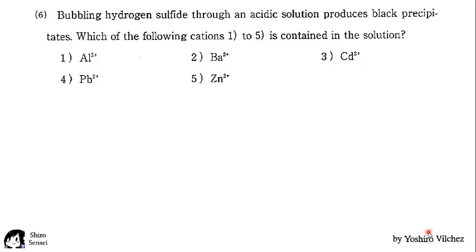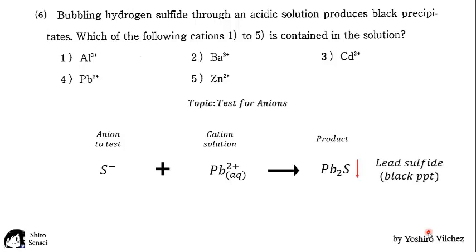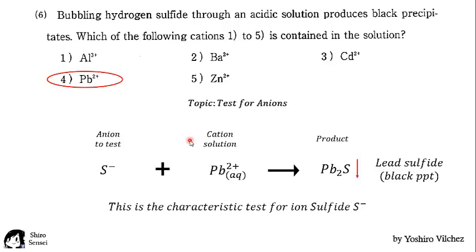How to do this? The topic for this problem is test for ions, specifically for anions. We have the test for sulfide which is bubbled through an acidic solution containing lead cations shows a black precipitate, which is lead sulfide. This is a characteristic test for ion sulfide.